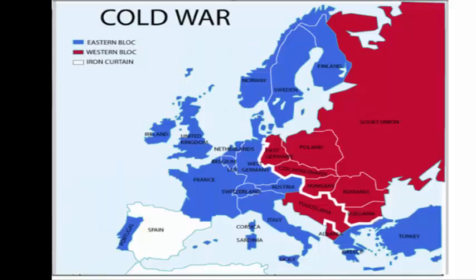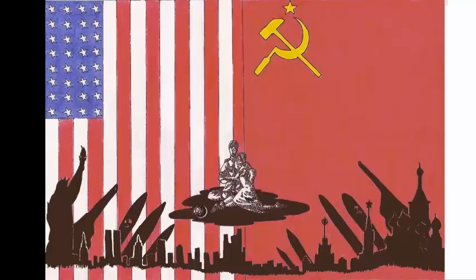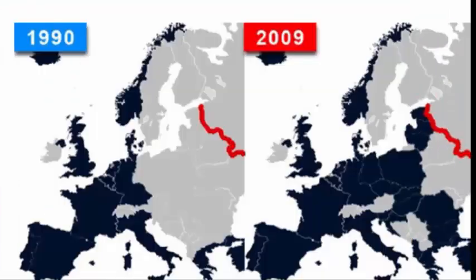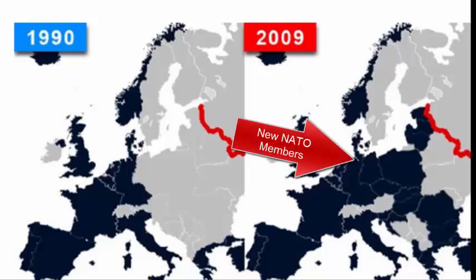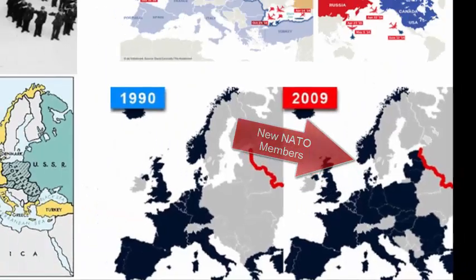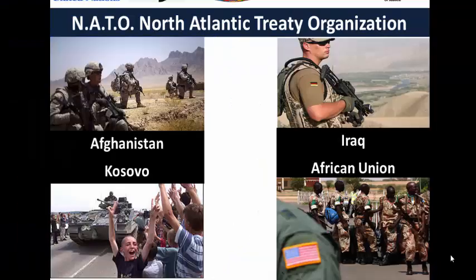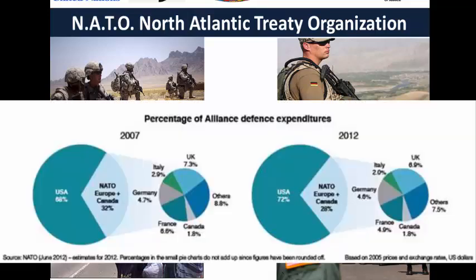While the two sides never directly fought one another, the world lived in fear of NATO and the Soviet Union going to war — and when I say NATO, I mostly mean the United States. With the collapse of the Soviet Union around 1990, former Soviet states like Poland and Croatia joined NATO, making present-day Russia feel more threatened. NATO has sent troops and undertaken military operations in Afghanistan, Kosovo, Iraq, and Africa.